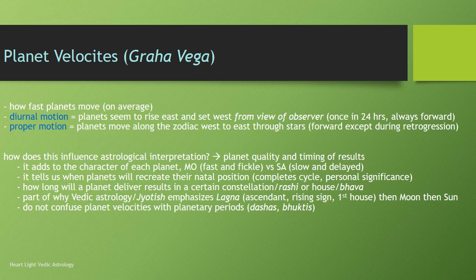There's also the concept of proper motion. This is when planets move along the zodiac — essentially a parade of constellations: Aries, Taurus, Gemini. The planets actually move along the zodiac from west to east, relative to the stars, because stars make up the constellations. The planets move forward through the zodiac most of the time, unlike diurnal motion. In proper motion, planets are forward most of the time, except when they're going through retrogression, and only some planets go through retrogression.